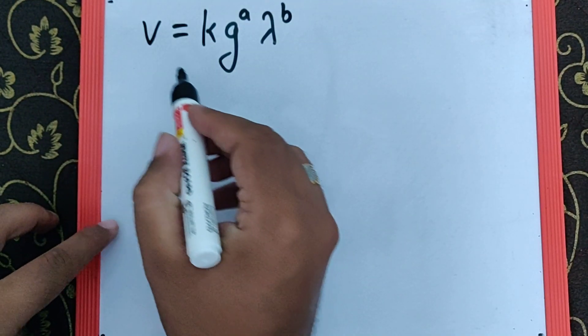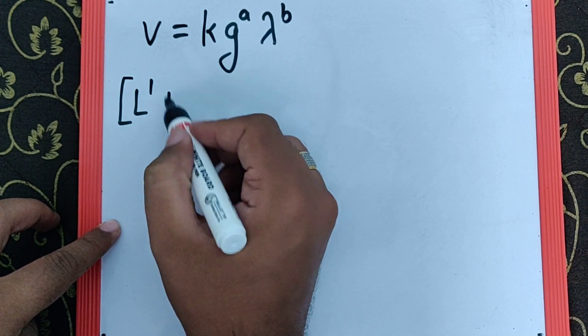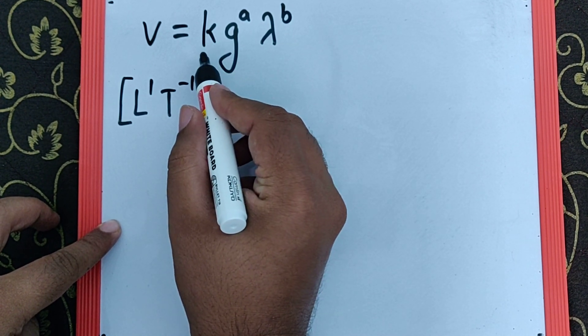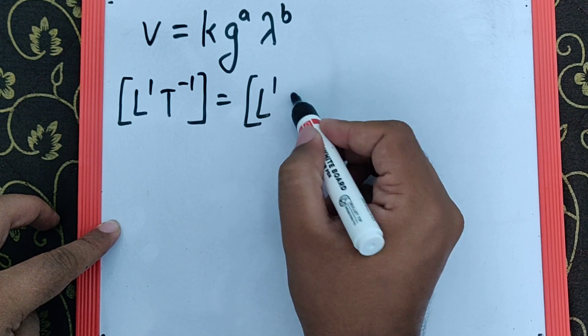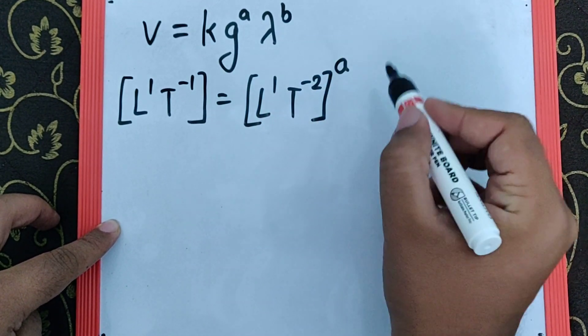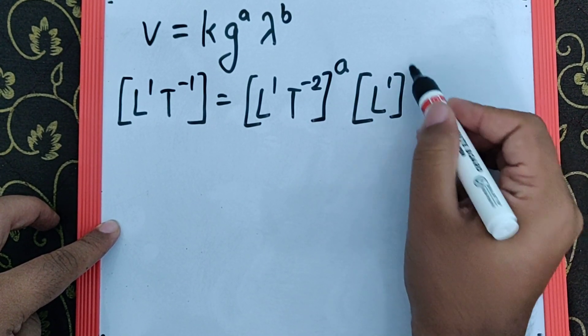Using dimensional analysis, the dimensions of velocity is L^1 T^-1. Since K is a constant, it has no dimensions. The acceleration due to gravity has dimensions L^1 T^-2, raised to A. Wavelength, which is the length of the wave, has dimension L^1, raised to B.